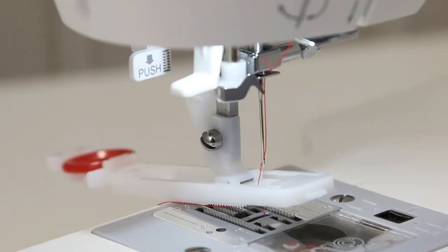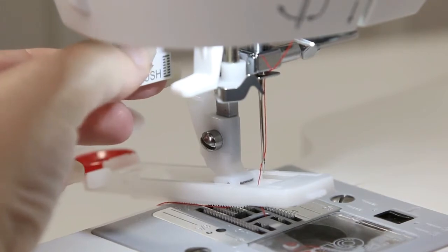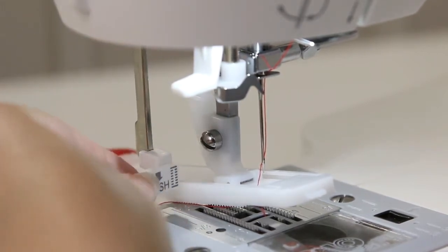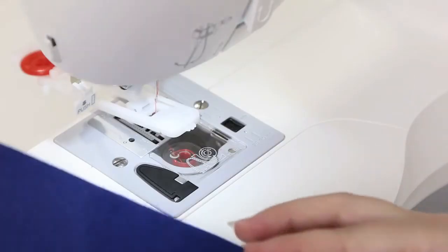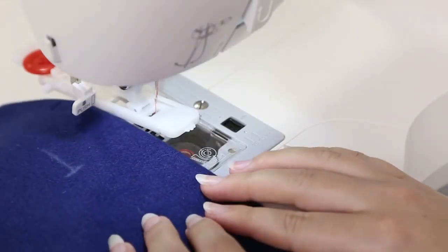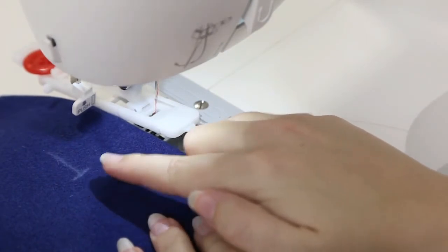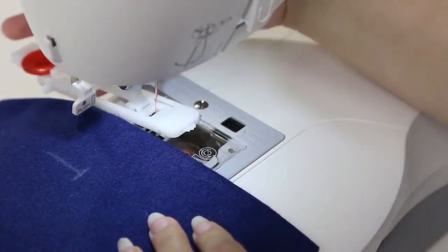The last thing we need to do before we stitch out our buttonhole is lower the buttonhole lever located to the left of your presser foot and push it back. Now we're ready to start sewing. I'm going to place my fabric next to my presser foot and line up the bottom line so that it will be under this hole.